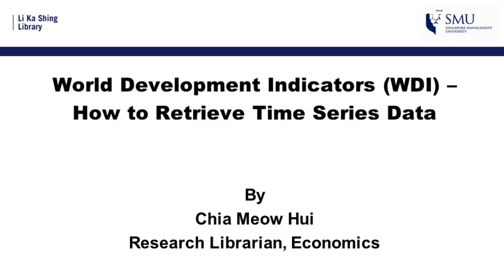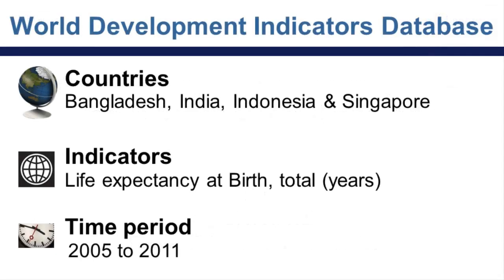This video shows you how to download time series data from the World Development Indicators Database. The countries chosen are Bangladesh, India, Indonesia, and Singapore. The indicator used in this video is life expectancy at birth. The time period is 2005 to 2011.